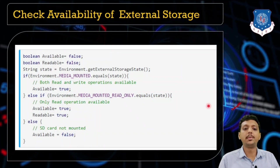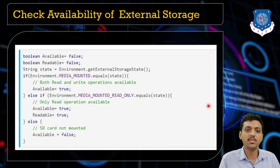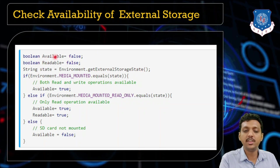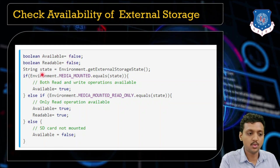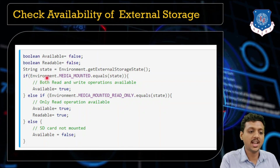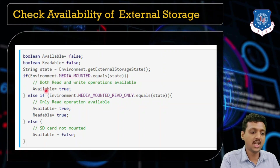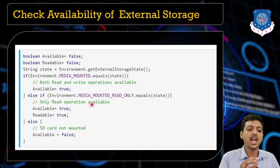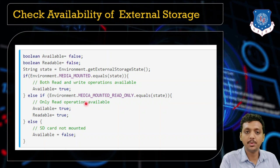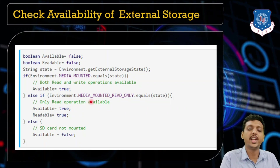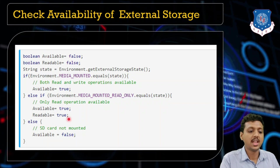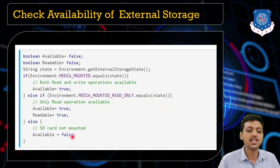To check the availability of external storage, we use the getExternalStorageState method. I've defined boolean variables — available and readable — both set to false by default. We get the state like: String state = Environment.getExternalStorageState(). Then check if Environment.MEDIA_MOUNTED.equals(state) — if so, available is true. Similarly, if Environment.MEDIA_MOUNTED_READ_ONLY.equals(state), then read-only operations are available. This tells us whether both read and write operations are available, and if available is false that means the SD card is not present.